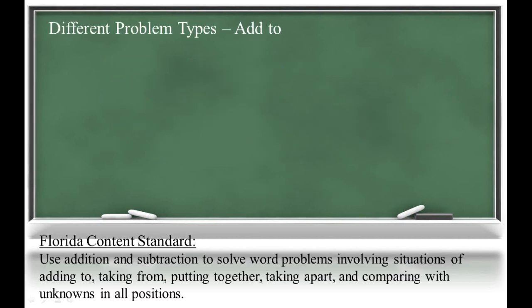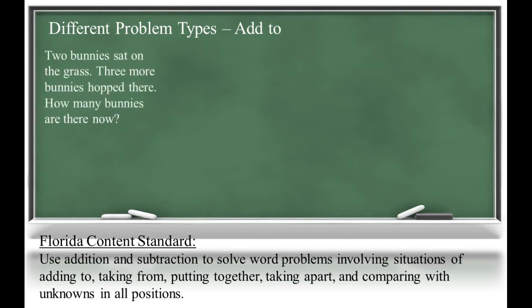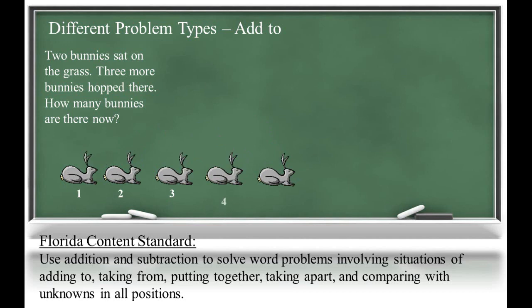Now let's take a few minutes to look at the different types of problems your child will learn. The first problems we will address will be add-to problems. Two bunnies sat on the grass. Three more bunnies hopped there. How many bunnies are there now? In this problem, the result is unknown and students can count two plus three more is five bunnies.